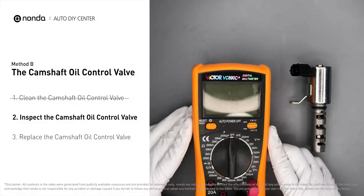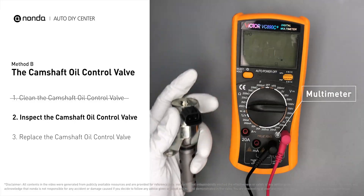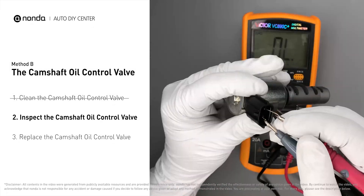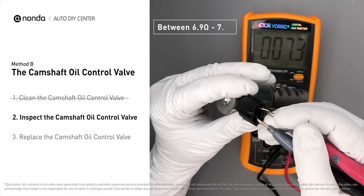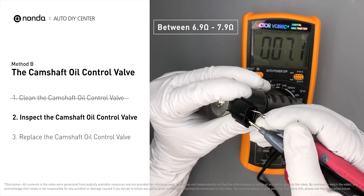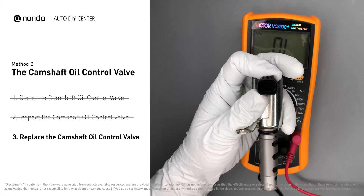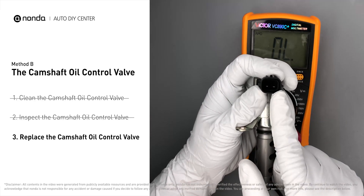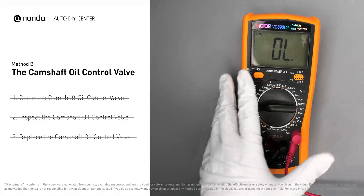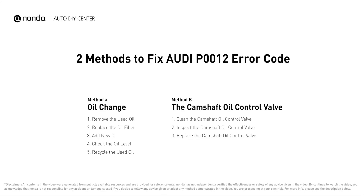Then use a multimeter to test the camshaft oil control valve. At an ambient temperature of 68 degrees Fahrenheit, the valve resistance should be between 6.9 ohms and 7.9 ohms. If you do not get a reading in this range, it indicates that the camshaft oil control valve is faulty and needs to be replaced.